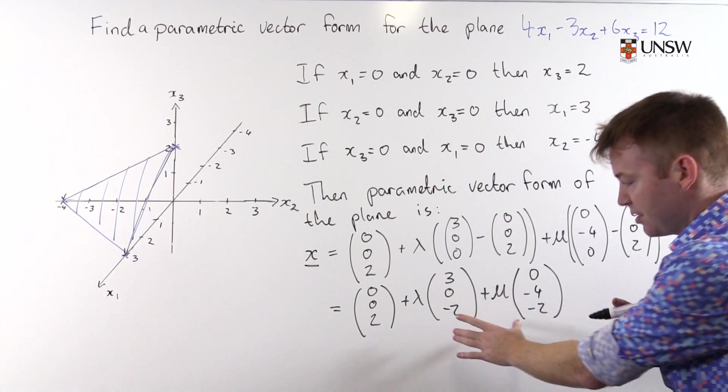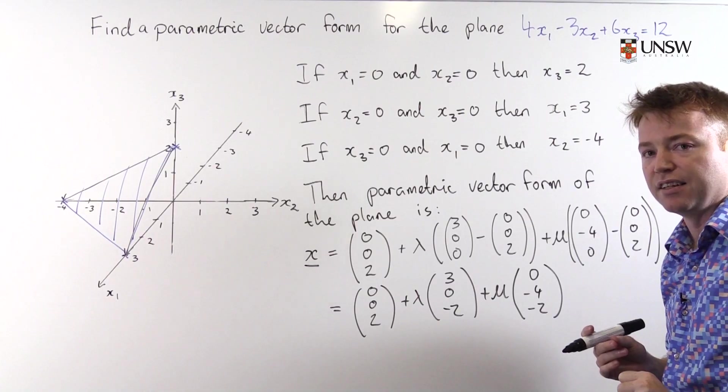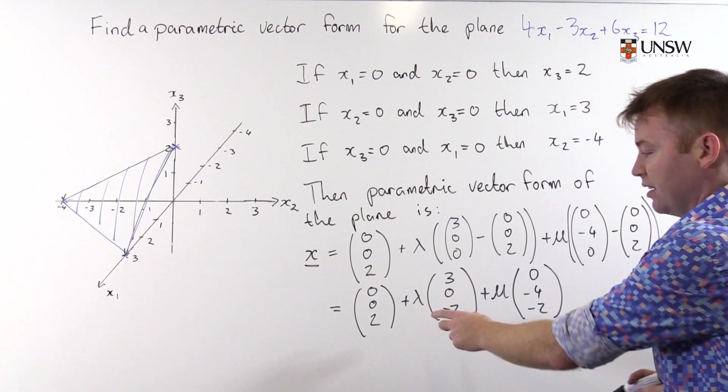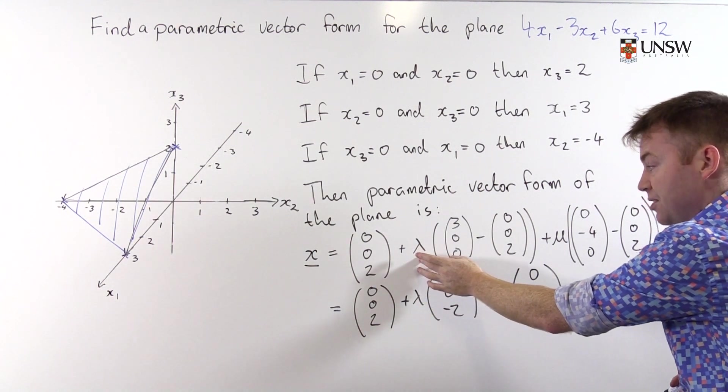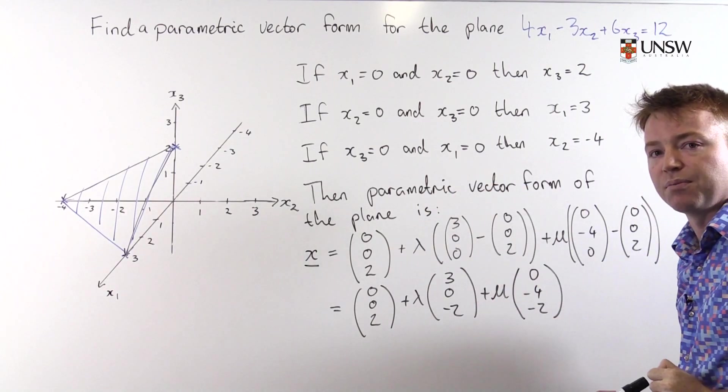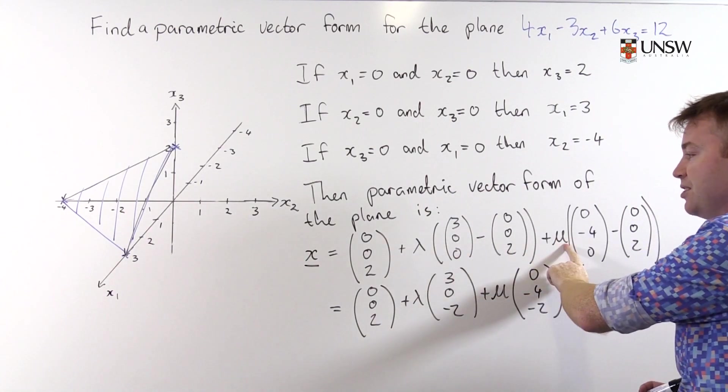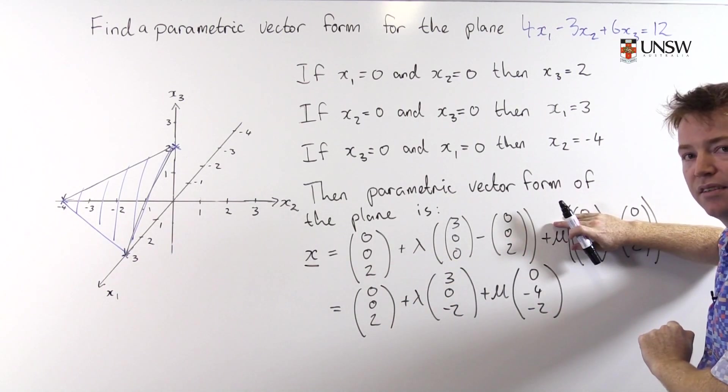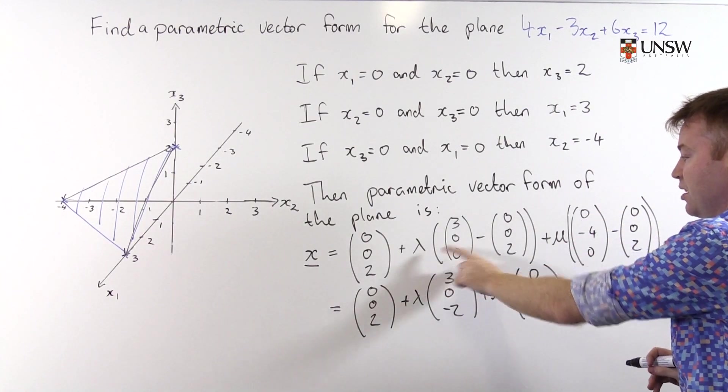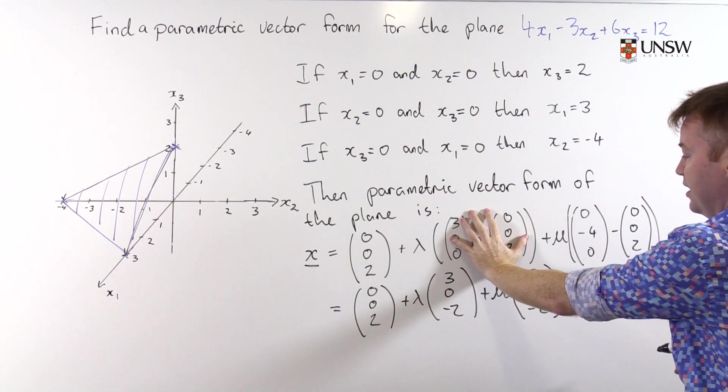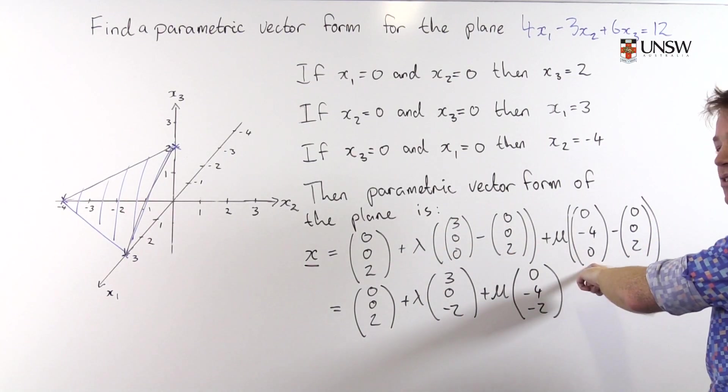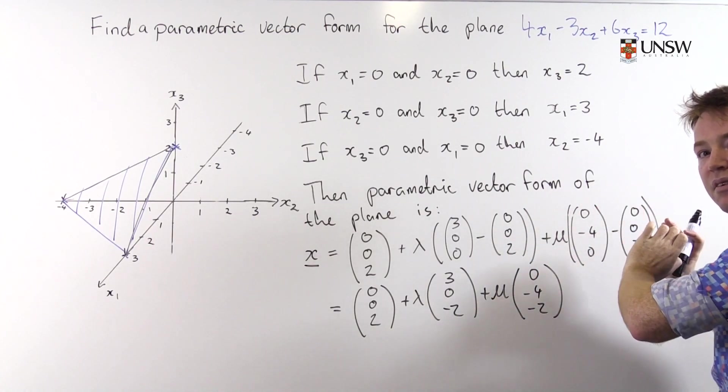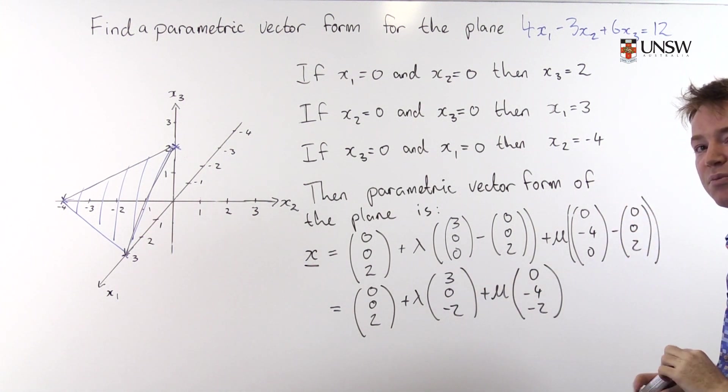And it's relatively straightforward to check that this parametric vector form of the plane indeed does contain those points it's supposed to contain. If you set λ = 0 and μ = 0 then you see that this point's on the plane. Similarly, if you set λ = 1 and μ = 0 then you see that that bit goes away, that will cancel with that and this point's on the plane. Similarly, if you set λ = 0 and μ = 1 then that goes away and this will cancel with this so you are left with (0, -4, 0). So in fact it's easy to see just by looking at this that this is a correct parametric vector form of the plane.